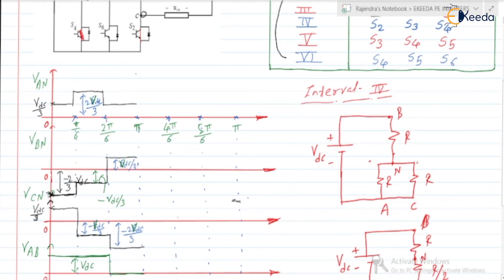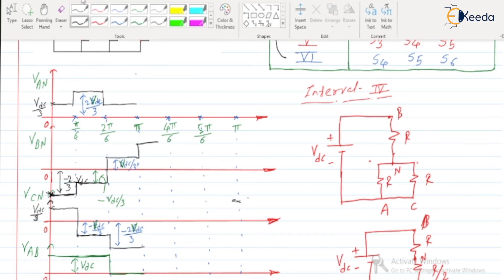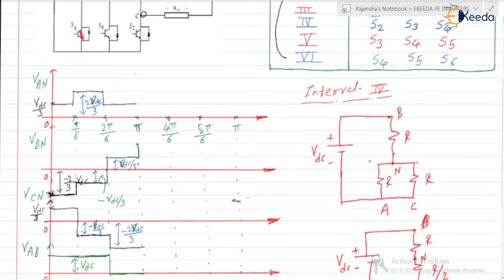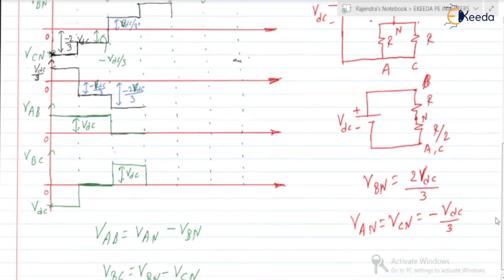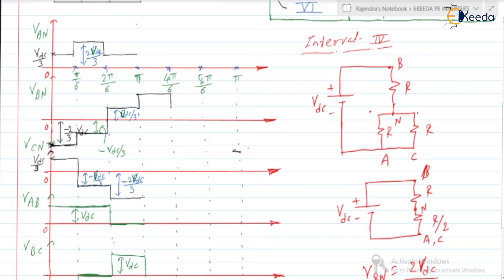So VBN is 2VDC/3, and VAN and VCN are both minus VDC/3. So we get one pulse at 2VDC/3 for VBN, and minus VDC/3 for VAN and VCN — this type of waveform for the 4th interval.